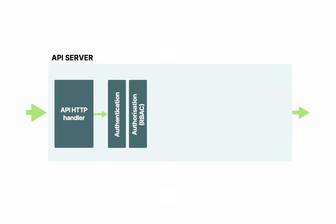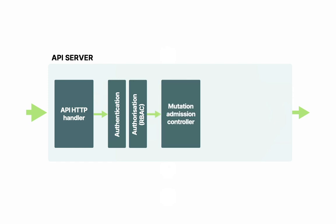Let's assume you are authenticated and authorized to create pods. The API then passes the request to the mutations admission controller. This component is in charge of looking at your YAML and modifying it — or mutating it — hence the name mutation controller. For example, if you forget to add a default storage class to your YAML, the admission controller will add that in for you.